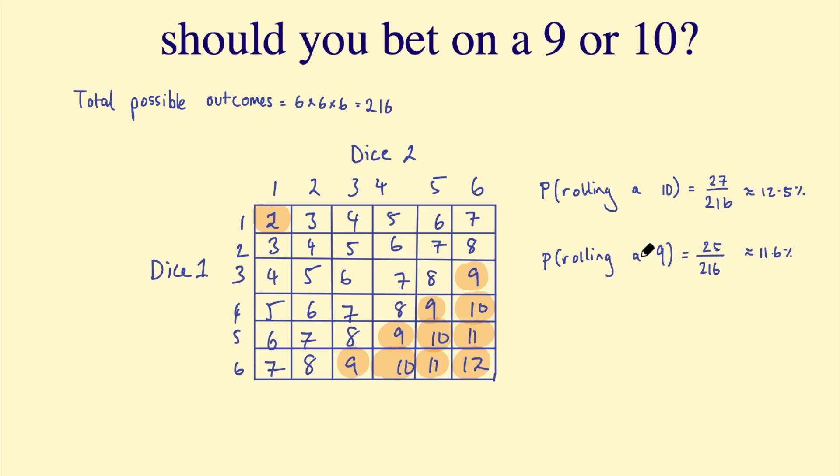In fact, somebody actually did the mathematics behind this, and they came up with the number 7,600. So they figured out that you would have to roll three dice over 7,000 times before you would actually notice that a 10 is more common than 9. And I will link that article in the description as well.